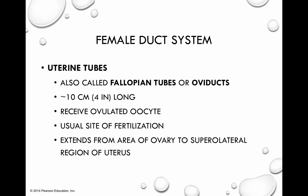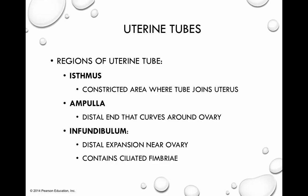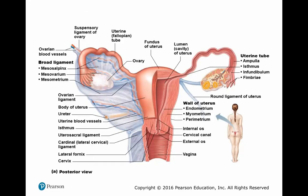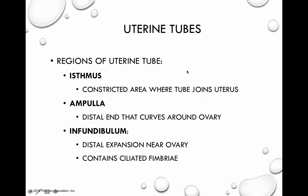The uterine tube is the usual site of fertilization, and it extends from just over the ovary to the superolateral region of the uterus. There are different regions of the uterine tube to be familiar with. Where the uterine tube connects to the uterus is referred to as the isthmus — that slightly constricted area near the uterus. As we continue toward the ovary, we reach the distal end that curves around the ovary, referred to as the ampulla. The distal expansion that opens into a funnel shape is referred to as the infundibulum.